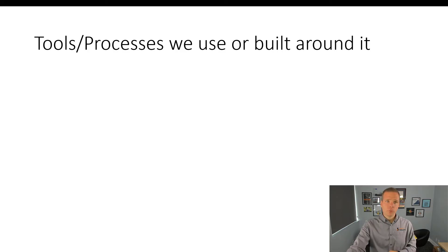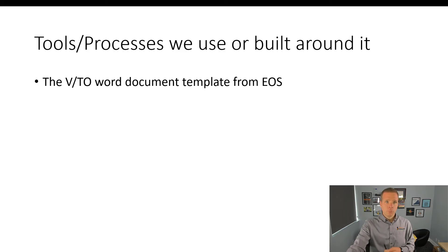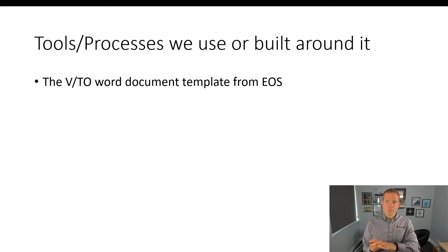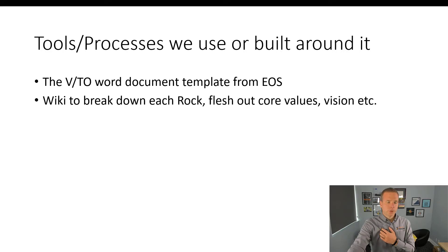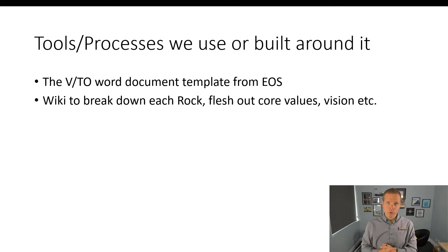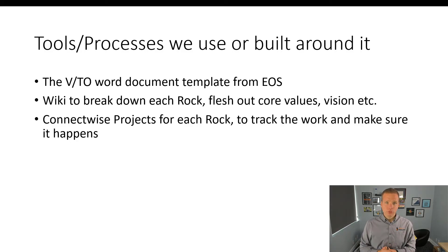As an MSP, here are some tools and processes we built around Traction. We started with the template from EOS. Originally we had one VTO for everything, but in the last six months we split it out so each of our three businesses — the two MSPs and Top Left — each have their own VTO. We use a Confluence Wiki to break down each Rock and flesh out the core values, with training modules for new hires. Everyone has access to the vision, mission, yearly plans, and quarterly plans. We use ConnectWise projects to track each Rock, and tickets flow into Top Left boards so we can make sure they happen around all the other work.